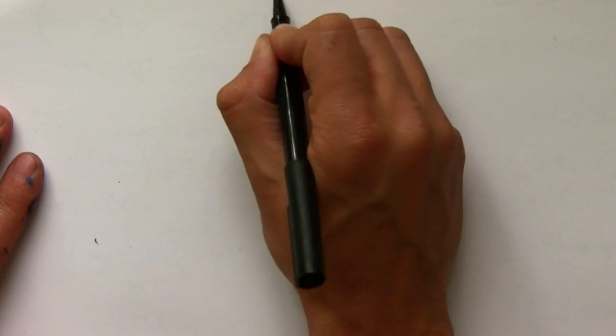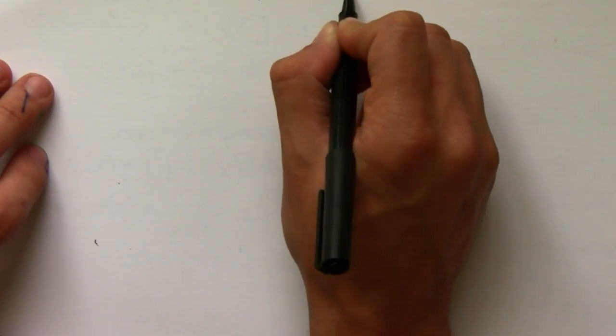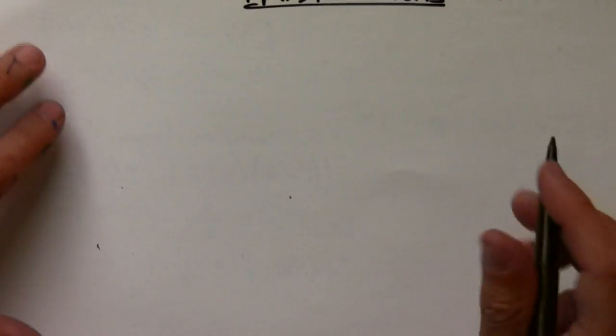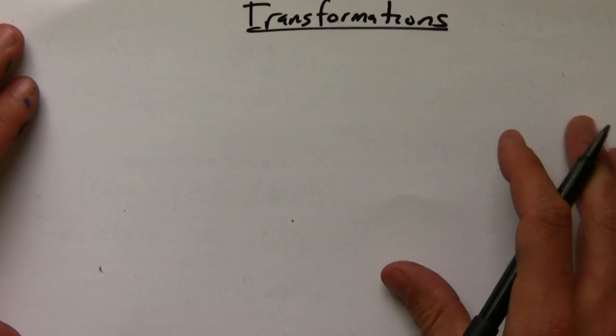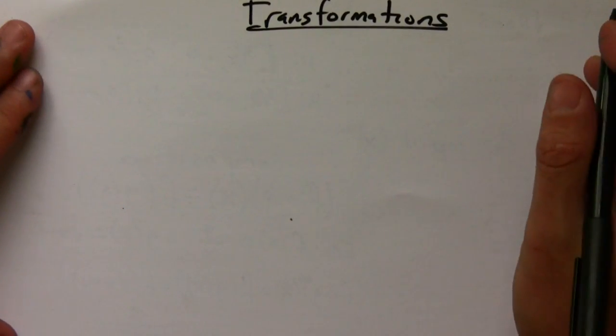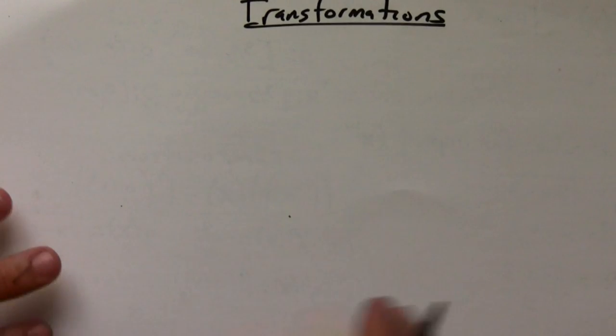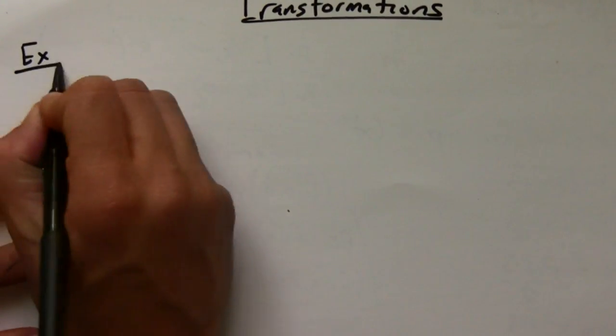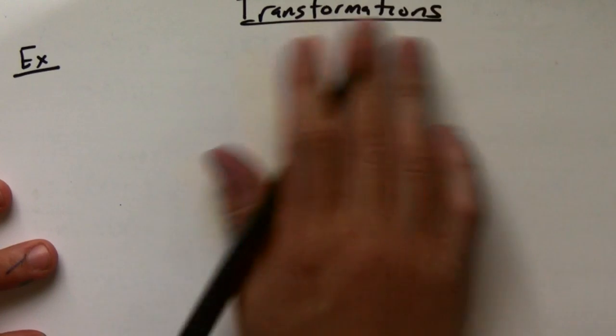Let's talk a little bit about transformations of functions, which is really important. Now that we've talked about our library of functions that we should know, we can do transformations on them. We're going to do it by example. I'm just going to do a comprehensive example that has all the different transformations.